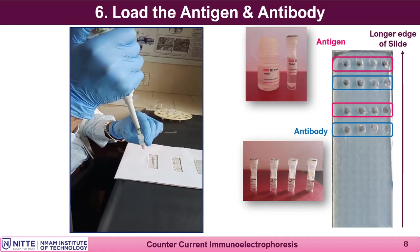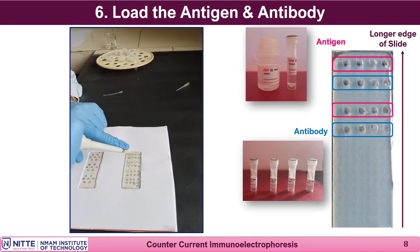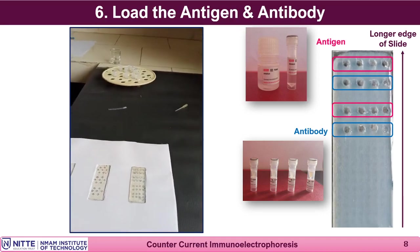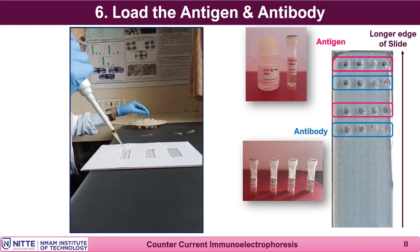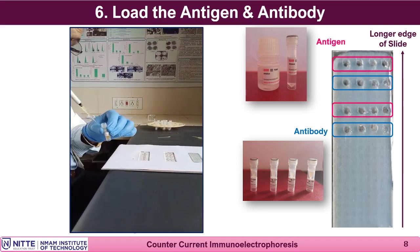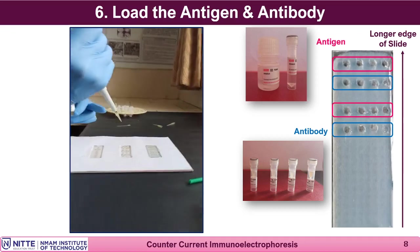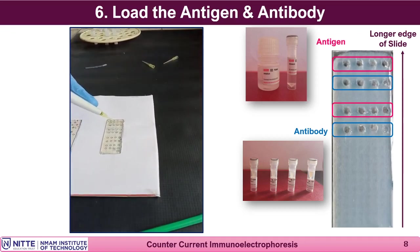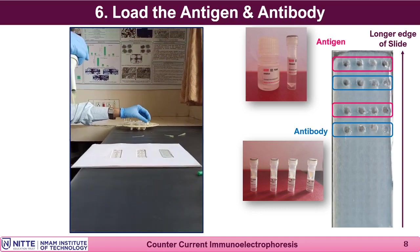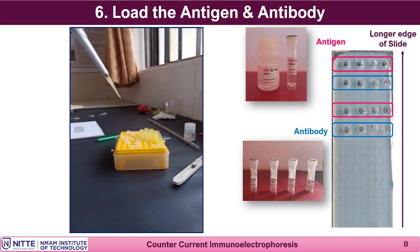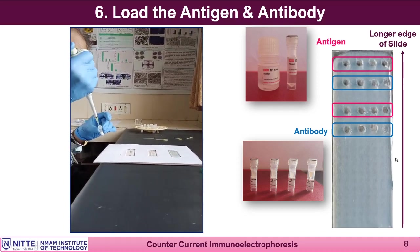In unknown samples, if the antigen is not present, there will be no precipitin band formed. But in the control well, because you have loaded known antigen and antibody, a precipitin band must appear between the wells, indicating that electrophoresis ran properly. Without a control, if all samples are negative, the entire slide will show no band, creating confusion about whether electrophoresis occurred. It is always better to load a known antigen and antibody in the last pair of wells as a control.